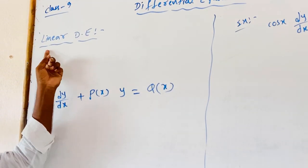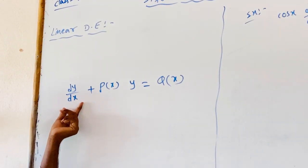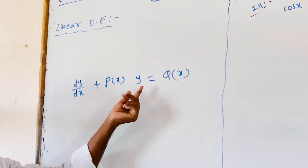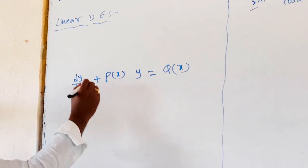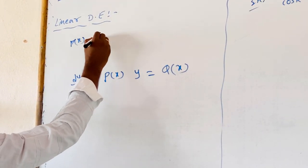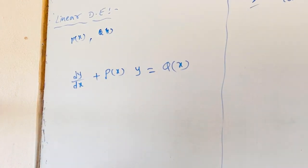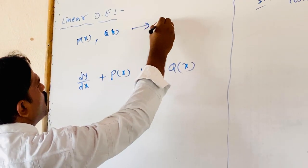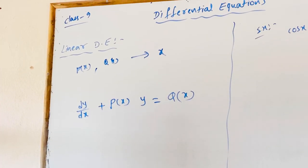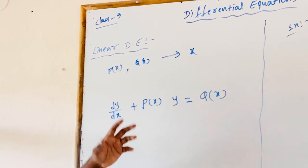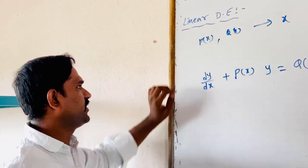The linear differential equation in first degree is: dy/dx + p(x)·y = q(x), where p(x) and q(x) are continuous functions of x only. We can write them in algebraic, trigonometric, or any other form in terms of x only. Log(x) also we can use.